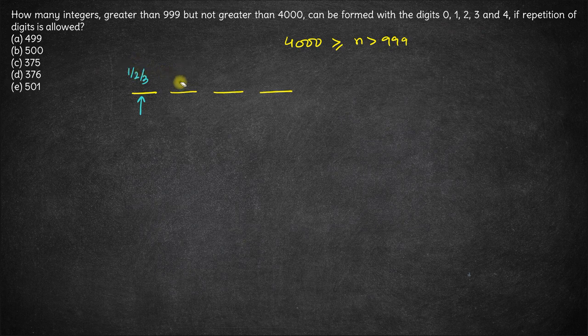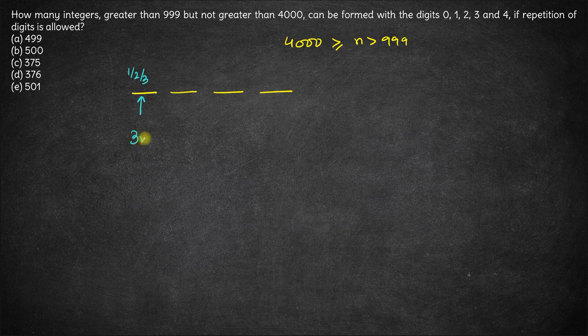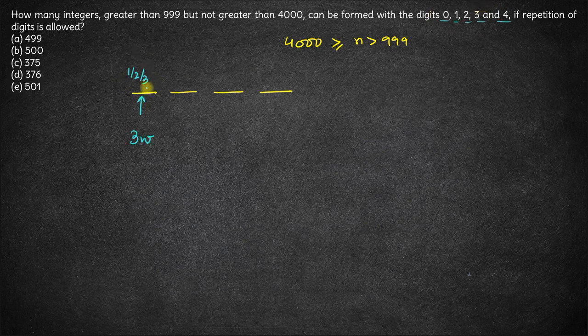If the thousands digit is 1, any digit can be put over here. Similarly, if the thousands digit is 2 or 3, any digit can be put over here. So this digit can be filled in three ways. Now you have 0, 1, 2, 3 and 4. 0 cannot come here, otherwise it will not be a 4 digit number.